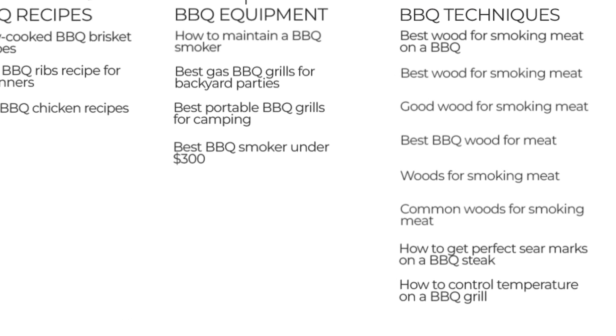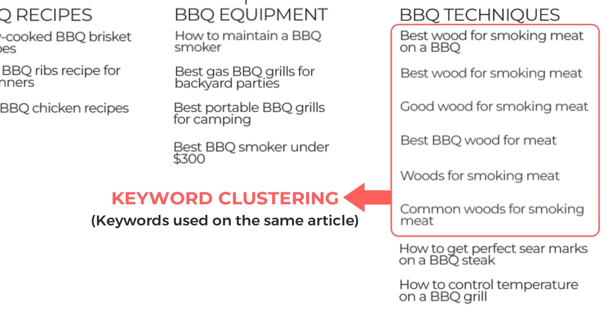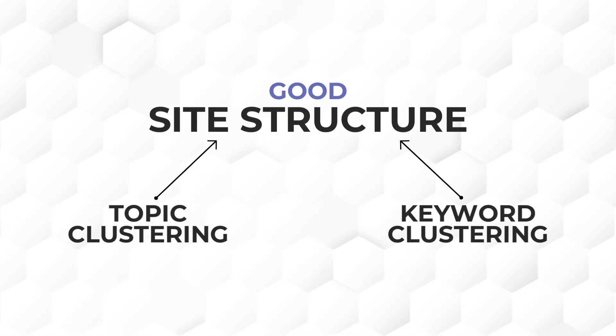It focuses on grouping related content based on broader categories. It is not the same as keyword clustering, which groups keywords that share the same meaning and search intent for a single piece of content. However, both topic clustering and keyword clustering are essential steps in building a strong silo structure. If you haven't watched our video on creating a silo structure right here, we highly recommend watching it.